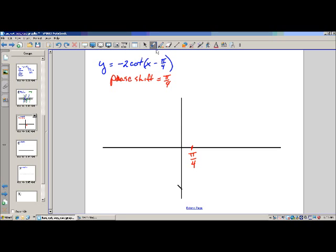What is the period? Well, this coefficient of x in the argument is 1. So the period is the normal period for cotangent, which is pi.